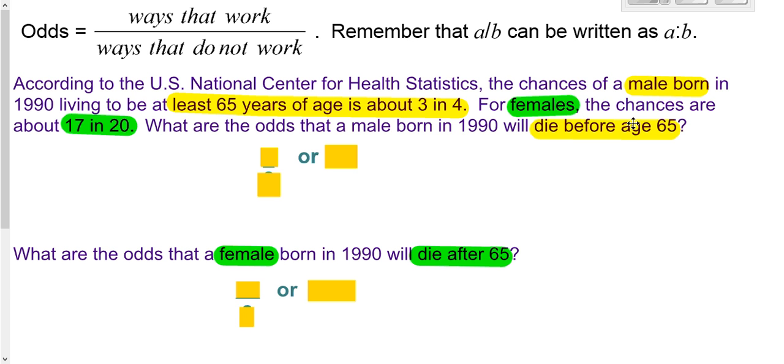So a male will die before age 65. Well, it says three out of four males will live to at least 55 or 65. So we want to die before that, so that means that only occurs once.